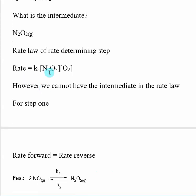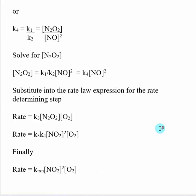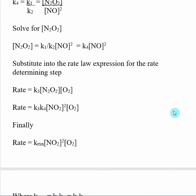We're going to plug it in right here in our rate law expression for our rate determining step. What we end up getting is that rate equals K3 times K4 times our concentration of NO squared, and that is also going to be multiplied by O2.